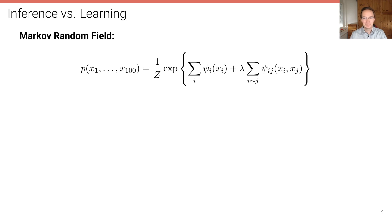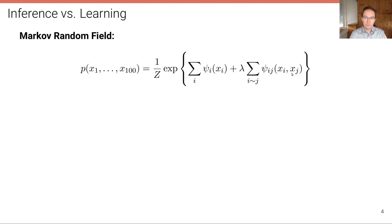So we have a sum of unary potentials and a sum of pairwise potentials over adjacent pixel sites. This defines our probability distribution. Because this is not normalized, we divide by the partition function, which is this expression summed over the entire state space of all the variables x — or integrated over the state space in the case of continuous variables.